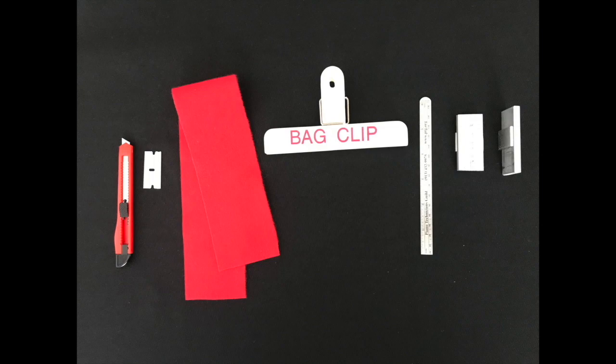Here are some other things that I'll use: a blade, a razor blade, some good bushing cloth. This is a bag clip I'll talk about later, a good ruler, and then the little tools on the right I'll show you in another video.